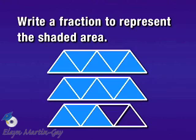Notice in this figure, we have three whole figures, so we have three whole pieces. Each of these is divided into five triangles of equal area. So because of that, the number of equal parts in a whole is five. That means our denominator is five.